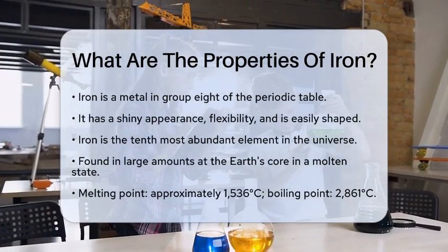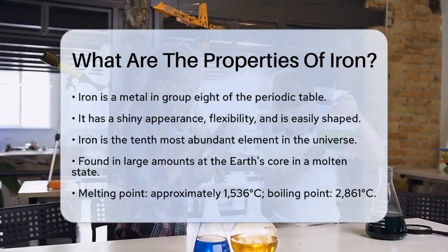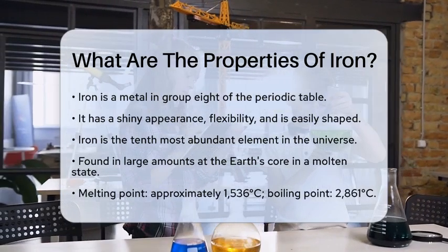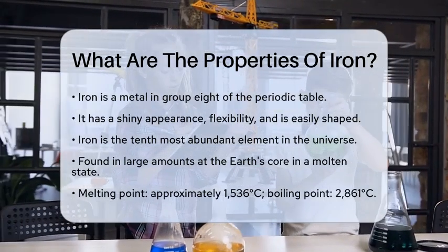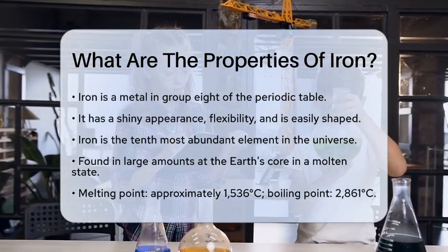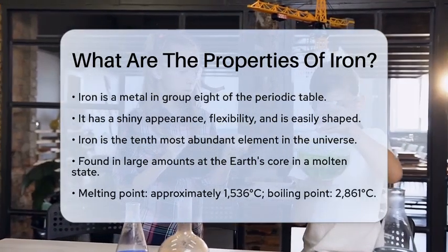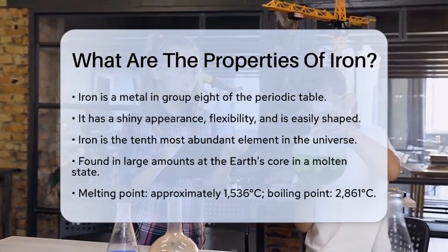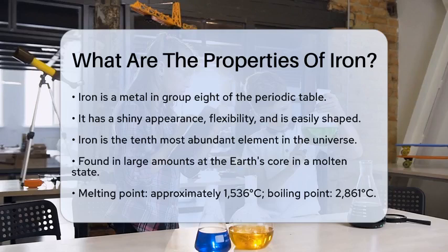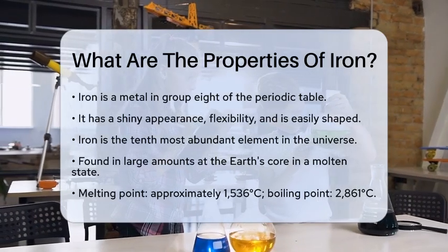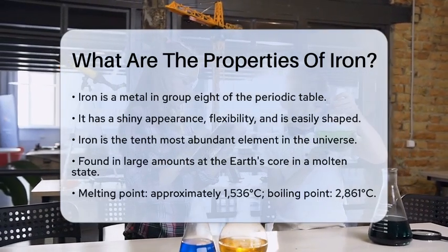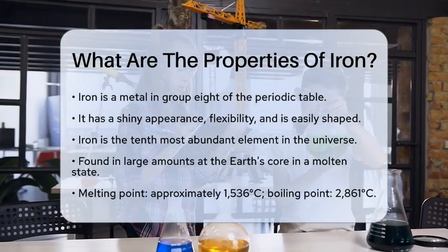Iron is a metal that belongs to group 8 of the periodic table. It is known for its shiny appearance, flexibility, and ability to be shaped easily. This silver-gray metal is the tenth most abundant element in the universe and is found in large amounts at the Earth's core in a molten state.